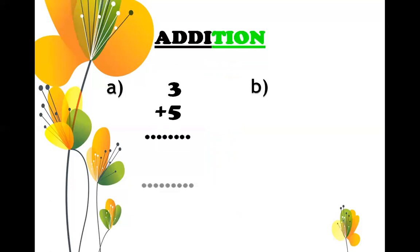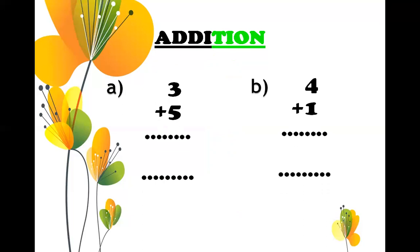Now addition. Let's do it. You have to add 3 and 5. What you're going to do — draw three lines in front of number 3: one, two, three. And in front of number 5, draw five lines: one, two, three, four, five. Now count all the lines: one, two, three, four, five, six, seven, eight. Eight lines are there, you have to write eight. This is the correct answer.